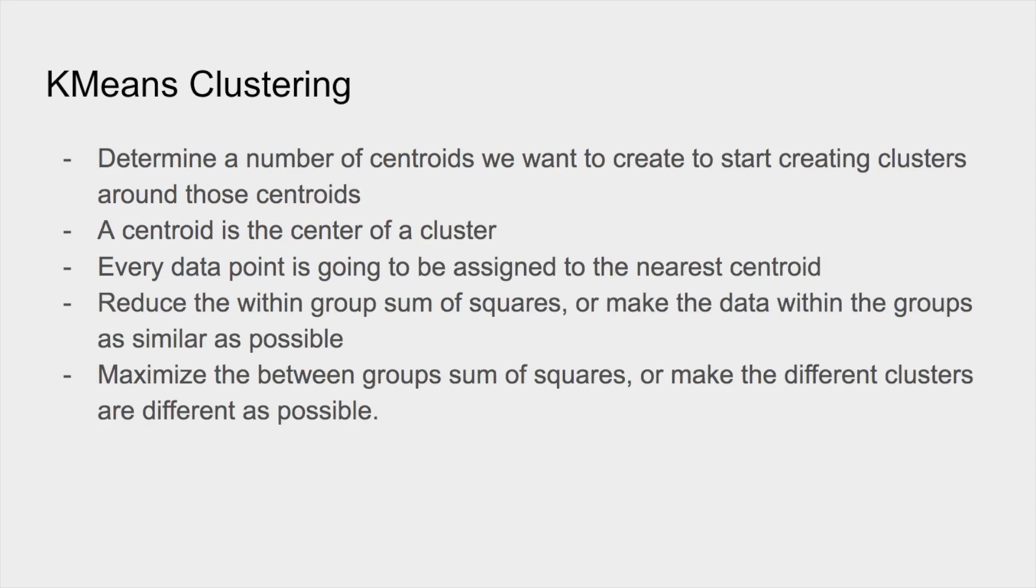The first thing we're going to do is determine a number of centroids that we want to create and then create clusters around those centroids. A centroid is just the center of a cluster and every data point is going to be assigned to the nearest cluster. The cluster is going to be the mean of all of the data points around it. That's why it's called k-means - it's the average of all of it.